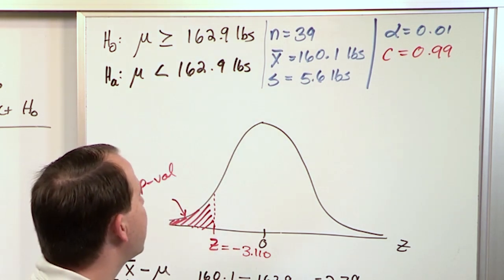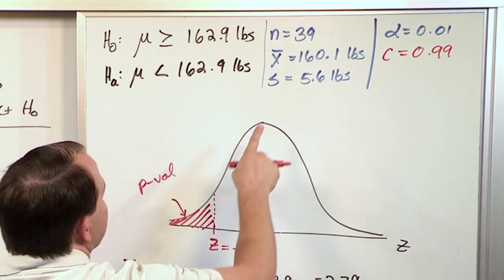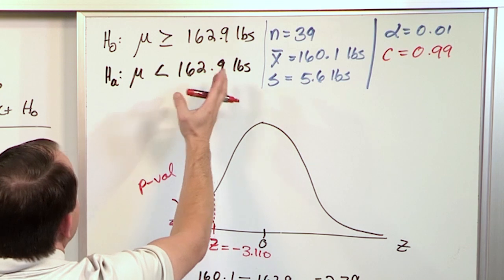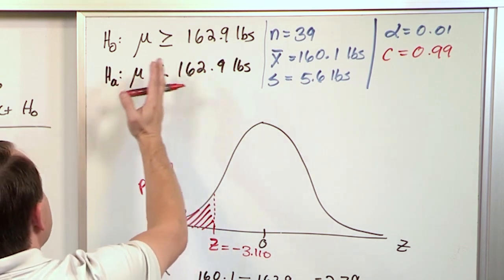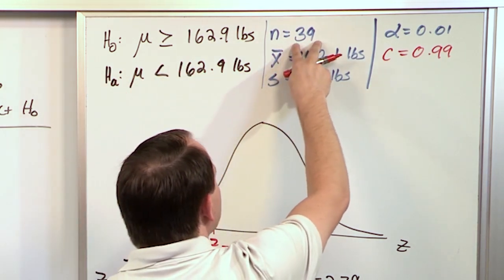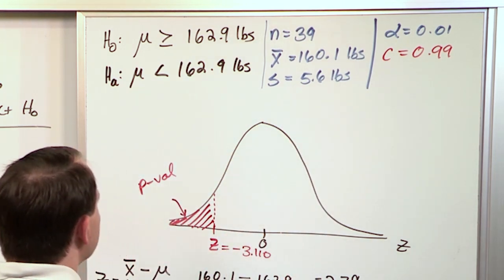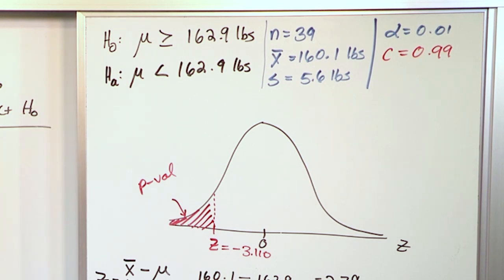And I think the reason that that probably came about was mostly because this value 160.1 is substantially lower than that. You have a reasonable number of samples. Standard deviation's not too high, not too low. So it was enough to go ahead and reject the null hypothesis.